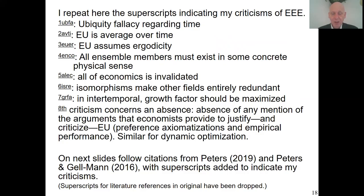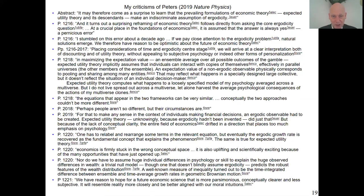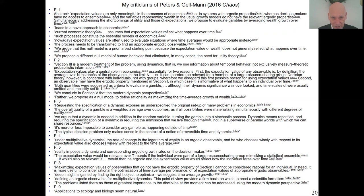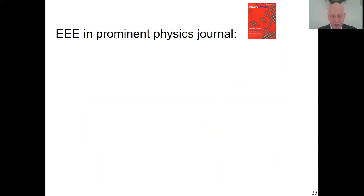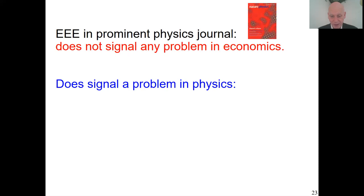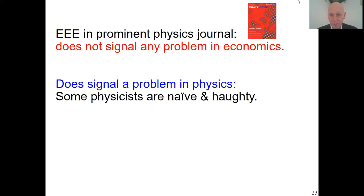On citations: I told you about the annotated superscripts. I formulated eight criticisms of Ergodic Economics, and the superscripts identify where those mistakes are made. I cite many texts from the Peters 2019 paper with superscripts so you can verify my claims. I did the same with the Peters and Gell-Mann paper of 2016. Here is a list of references used in my slides. Conclusion: the fact that Ergodic Economics appeared in a prominent physics journal does not signal any problem in economics — it signals a problem in physics. In my opinion, some physicists were naive and haughty. Thank you.